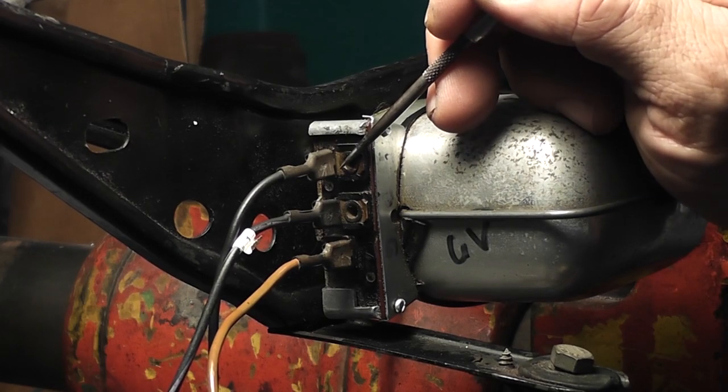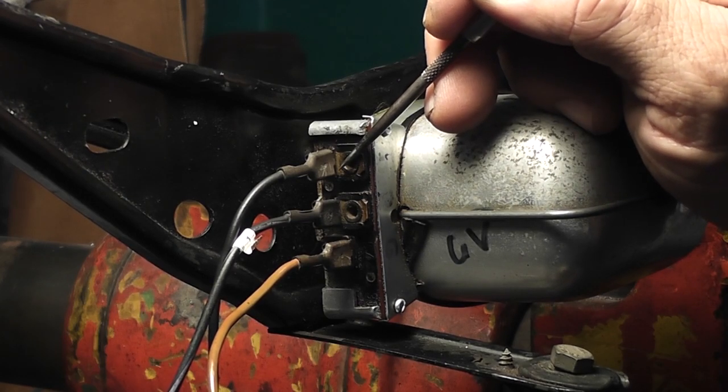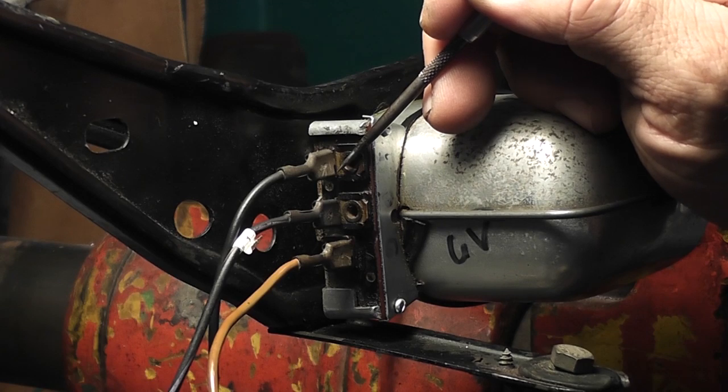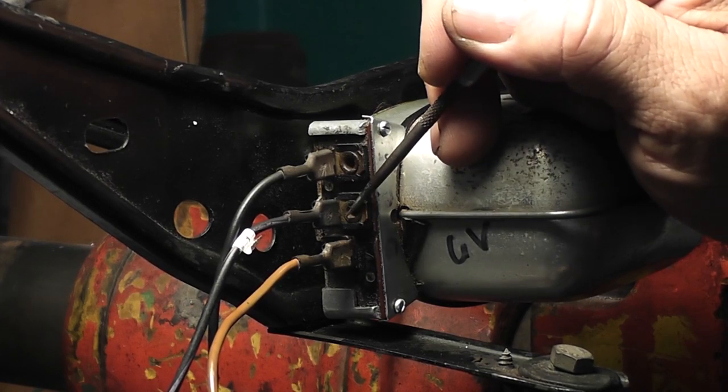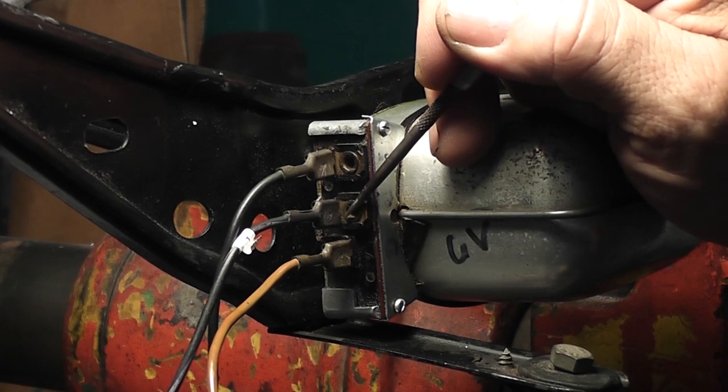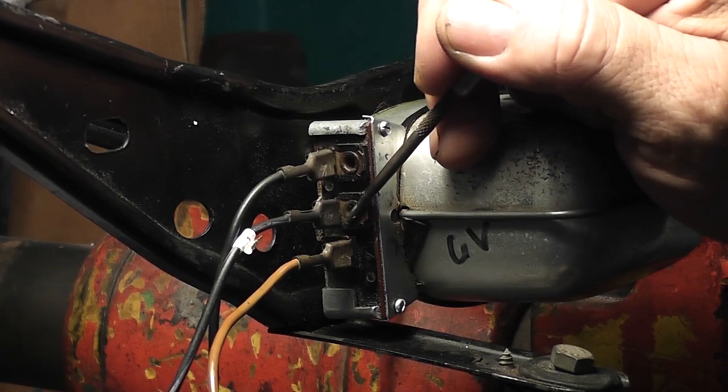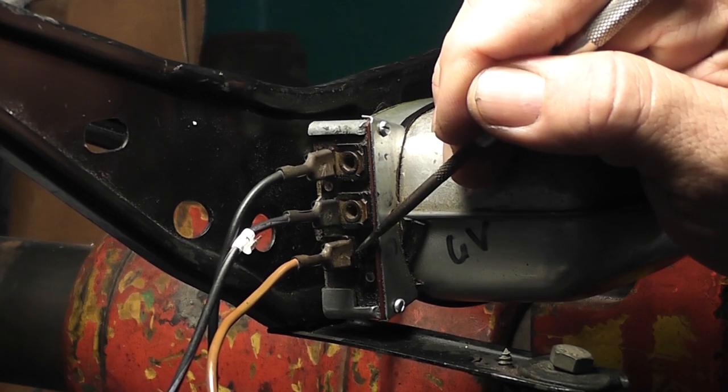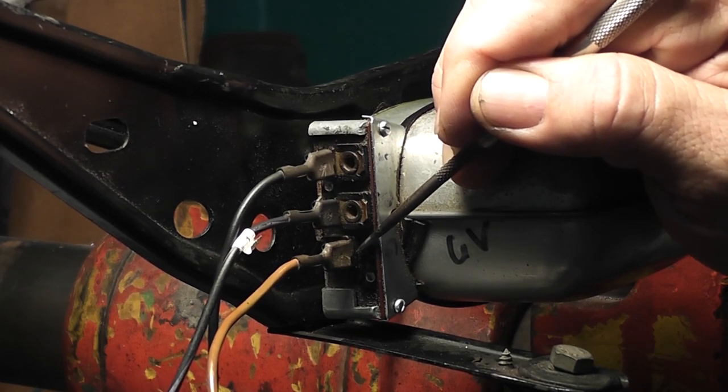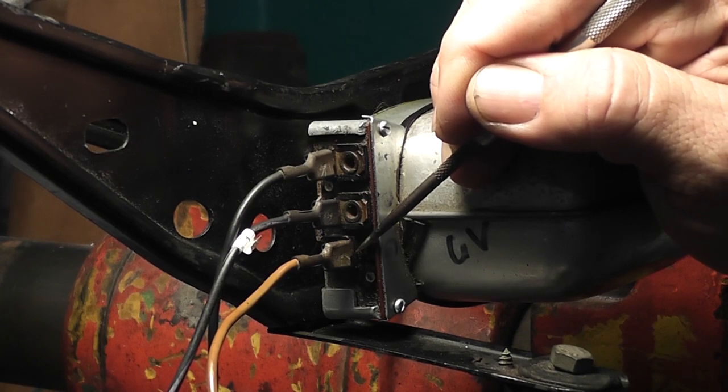This top post is the 54d and that will go to the 54d lug on your switch. The middle one right here is 31b and that will go to your 31b on your switch. And the bottom one is 54 and that'll go to 54 on your switch. Now 54 is the parking brake which will allow the wipers to rest in the parking position.